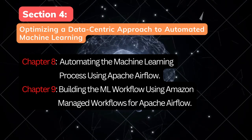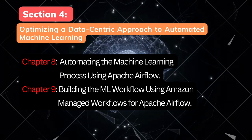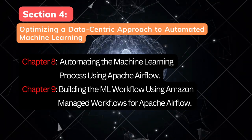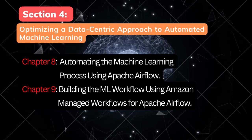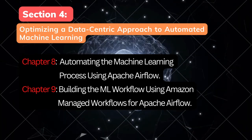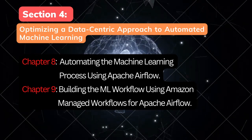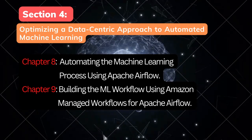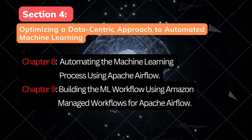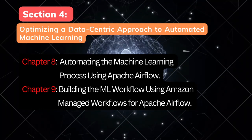Section 4 covers Optimizing a Data-Centric Approach to Automate Machine Learning, including Chapter 8 and Chapter 9. Chapter 8, Automating the Machine Learning Process Using Apache Airflow, introduces a data-centric workflow, explains why its application to the ML process is important, and covers the team members responsible for executing this part of the process. It elaborates on common tools such as Apache Airflow and the Amazon Managed Service for Apache Airflow, then walks you through building a managed Airflow environment.